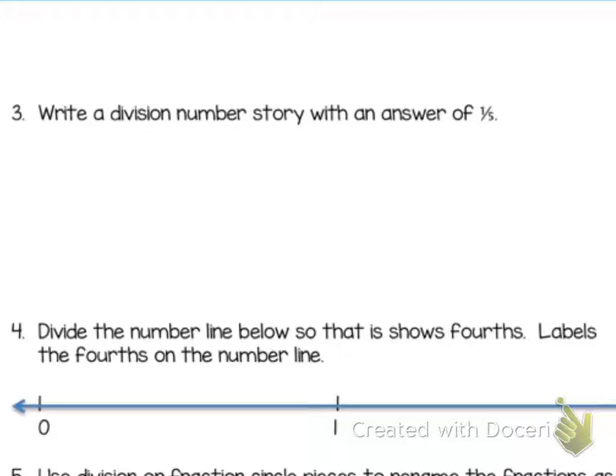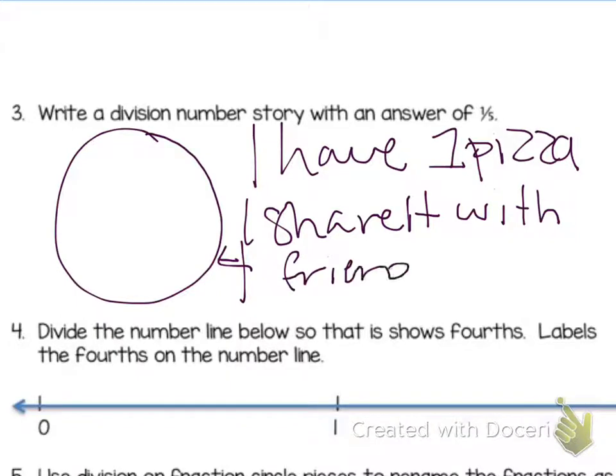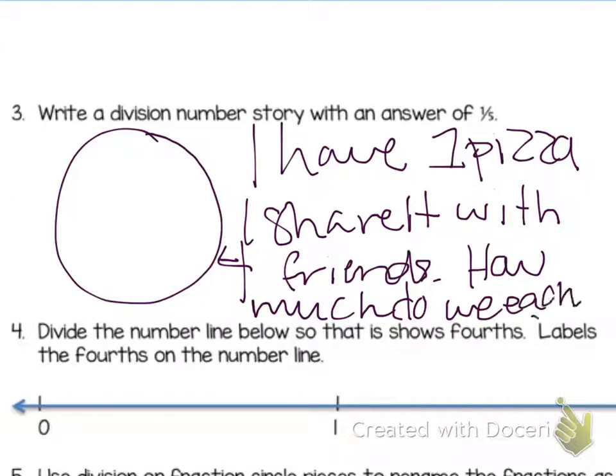Number 3 says write a division number story with an answer of 1 fifth. My hint to you for this one is you have 1 of something and you split it into fifths. I have 1 pizza. I share it with 5 friends, or 4 friends I'm sorry, so then my total is 5. How much do we each get? If I split this into fifths, it's not going to be perfect. If I eat this slice right here, I had 1 fifth of the pizza.